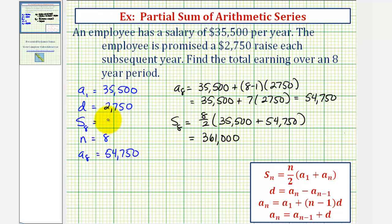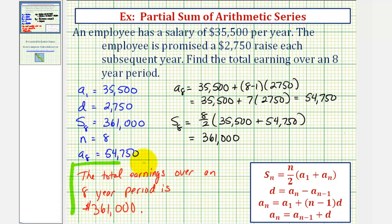So if s sub eight equals 361,000, that means this employee earned $361,000 over an eight-year period. I hope you found this helpful.